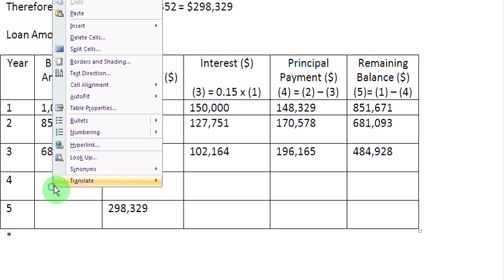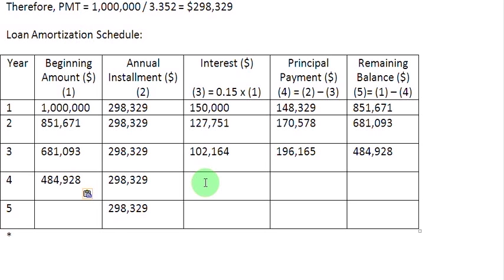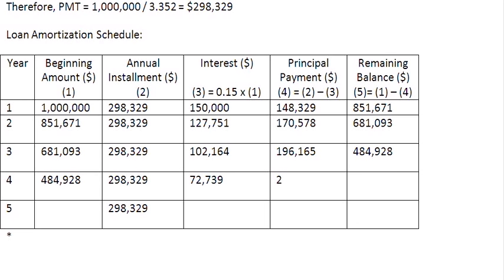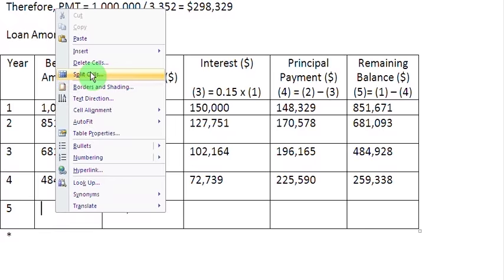For year 4, the beginning amount is 484,928. The interest is 15% of 484,928, which gives us 72,739. The amount applied towards principal repayment — the difference between the installment and the interest — is 225,590. The remaining balance is 484,928 minus 225,590, which leaves us with 259,338. This amount becomes the beginning balance coming into year 5.